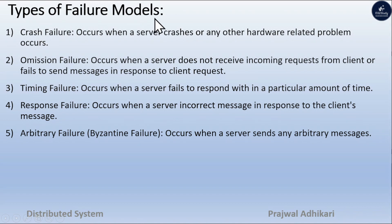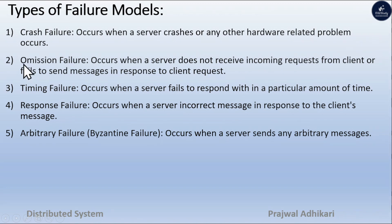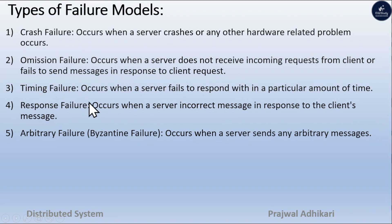Types of failure models — we have already studied this in unit 1, but here it is repeated. Crash failure: occurs when a server crashes or a hardware-related problem occurs. Omission failure: occurs when a server does not receive an incoming request from a client, or fails to send a message in response to a client request. Timing failure: occurs when a server fails to respond within a particular amount of time.